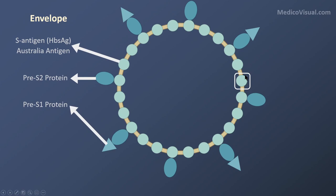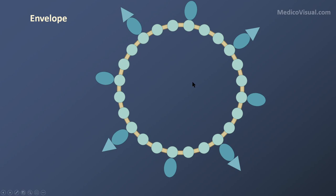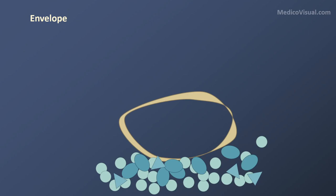If only the S antigen is present, it is called the small surface protein. If the S antigen is present along with pre-S2, that is the medium surface protein. If all three — S antigen, pre-S2, and pre-S1 — are all present, the complete protein consisting of these three subunits is called the large surface protein. So that is the structure of the envelope: a lipid bilayer with these surface proteins embedded into it.